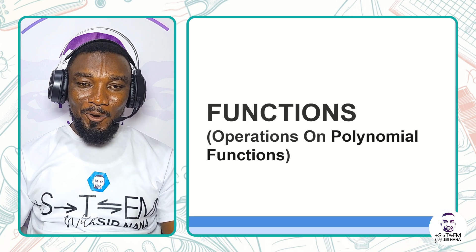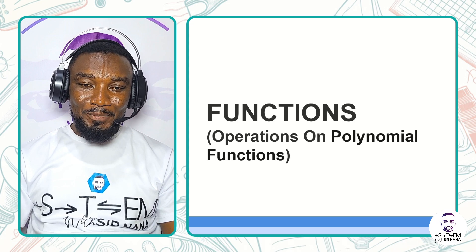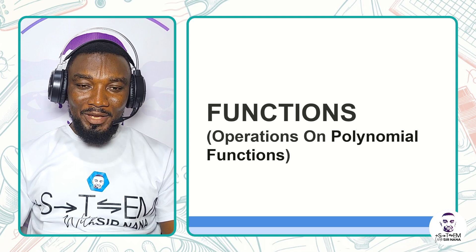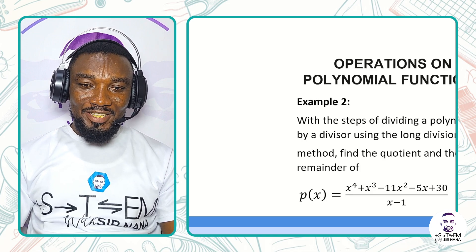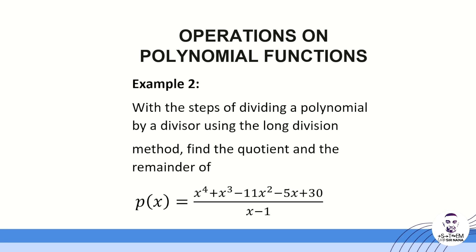We are looking at operations on polynomials, specifically how we can divide polynomials. The question says: using the steps of dividing a polynomial by a divisor with the long division method, find the quotient and the remainder. The function is b(x) = x⁴ + x³ - 11x² - 5x + 30, divided by x - 1.